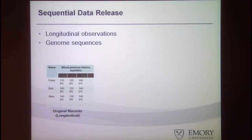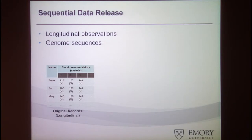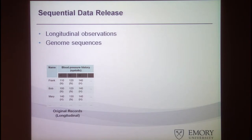For today's talk, I'll give a quick overview of one component for sequential data release — how we can release statistics from a sequential dataset while preserving temporal or longitudinal patterns. Sequential data typically involves longitudinal observations of the same variable for the same patient, or genome sequences for another example. Here we have patient names and their blood pressure history at different time points T1, T2, and T3, which could correspond to events like hospital admission, discharge, and readmission.